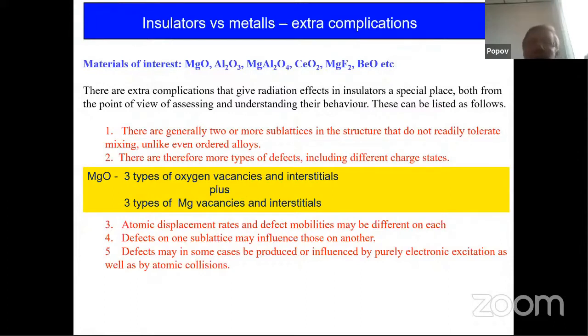If we compare metals and insulators, we have to understand that in the case of many metals we have only one sublattice. The situation in even simple oxide like MgO is very complicated because we have two, three types of different oxygen vacancies as well as interstitials, and three types of magnesium vacancies and interstitials. Because in the case of, for example, oxygen vacancies, we know that it exists in three charge states: bare oxygen vacancies, oxygen vacancies with one electron, and oxygen vacancies with two electrons. And properties of these defects are different.